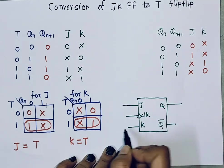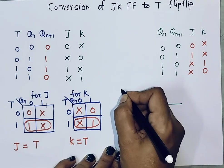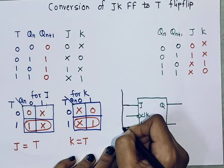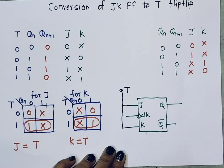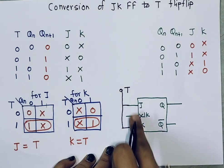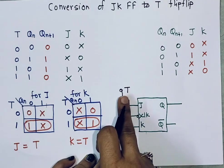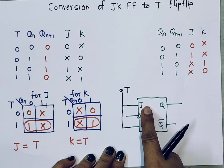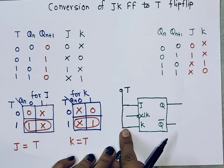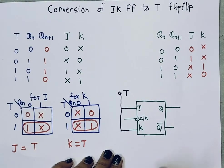Since both J and K equal T, I can simply connect input J and input K together and connect them to input T. In this way, I can convert a JK flip-flop into a toggle flip-flop by simply connecting inputs J and K together to input T. Thank you so much for watching.